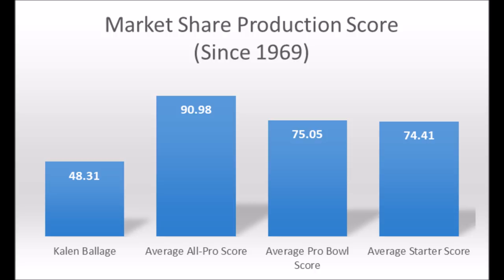When you get to the averages at the position, this point is reinforced further. The average all-pro score was 90.98, the average Pro Bowl score was 75.05, and the average starter score was 74.41 out of 100. So he's below average in all these areas — below average for an all-pro player, below average for a Pro Bowl player, and below average for a starter in terms of his overall production profile. Which again brings back the question: why was he not as productive as he should have been? That is a legitimate concern.